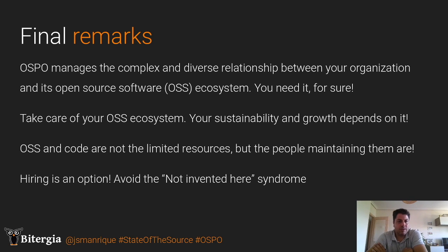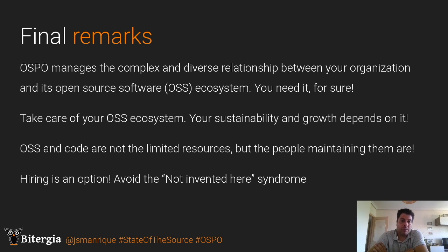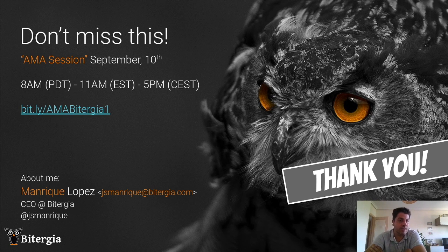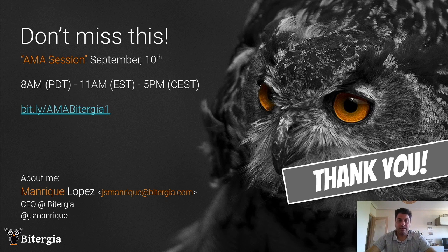OSPOs manage a complex and diverse relationship with different open source projects. This idea of an open source ecosystem means you need this figure or organization inside your company — you should be taking care of your open source ecosystem because your sustainability and growth as an organization may depend on it. The limited resource here is not the open source code; it's the people maintaining the code. Hiring is an option. We also have a session later today — please join us.